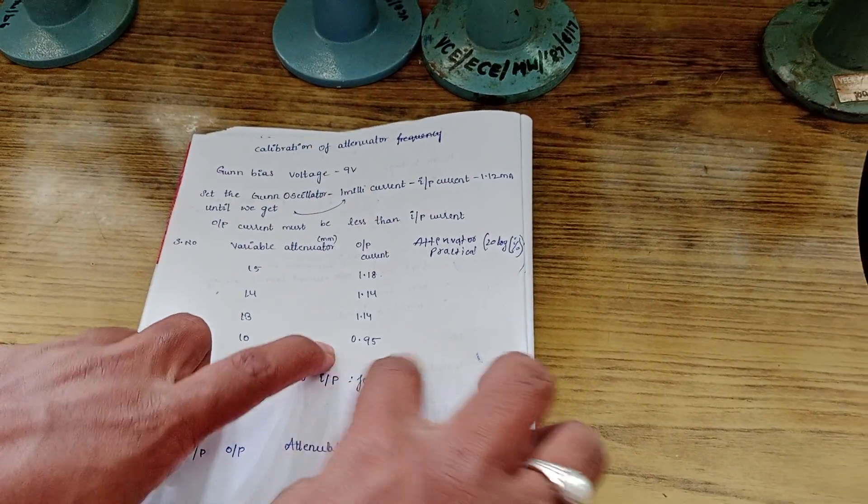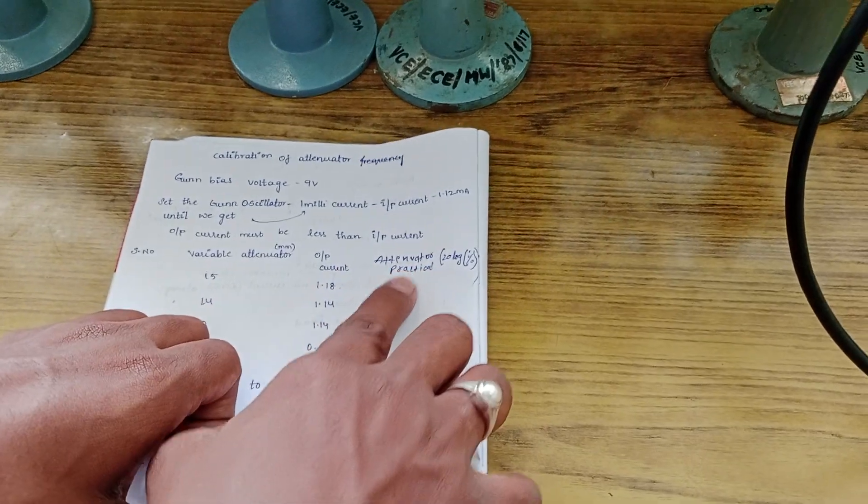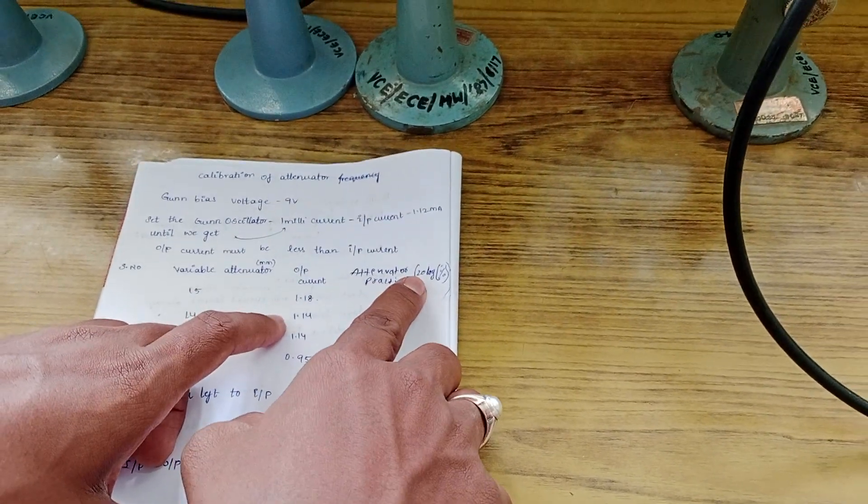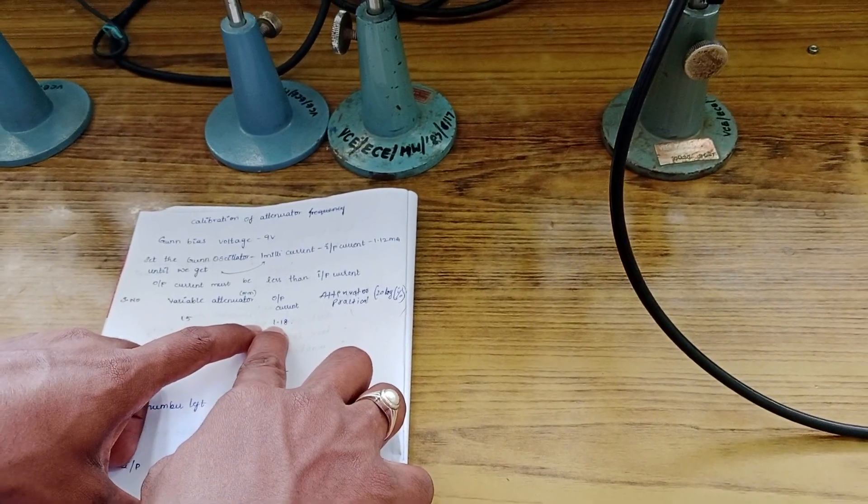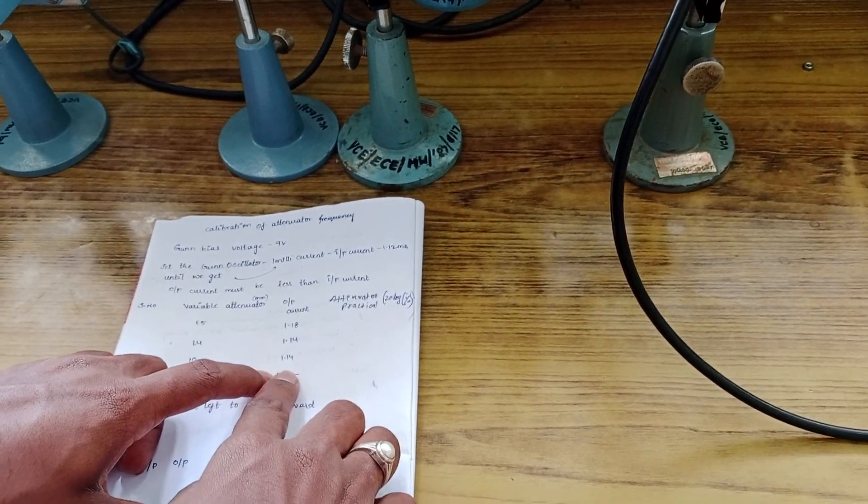After getting output current, you have to calculate the attenuator practical values by using the formula 20 log input by output, where our input will be 1.18 milliamps that we adjusted earlier and the output will be the output current in the table.